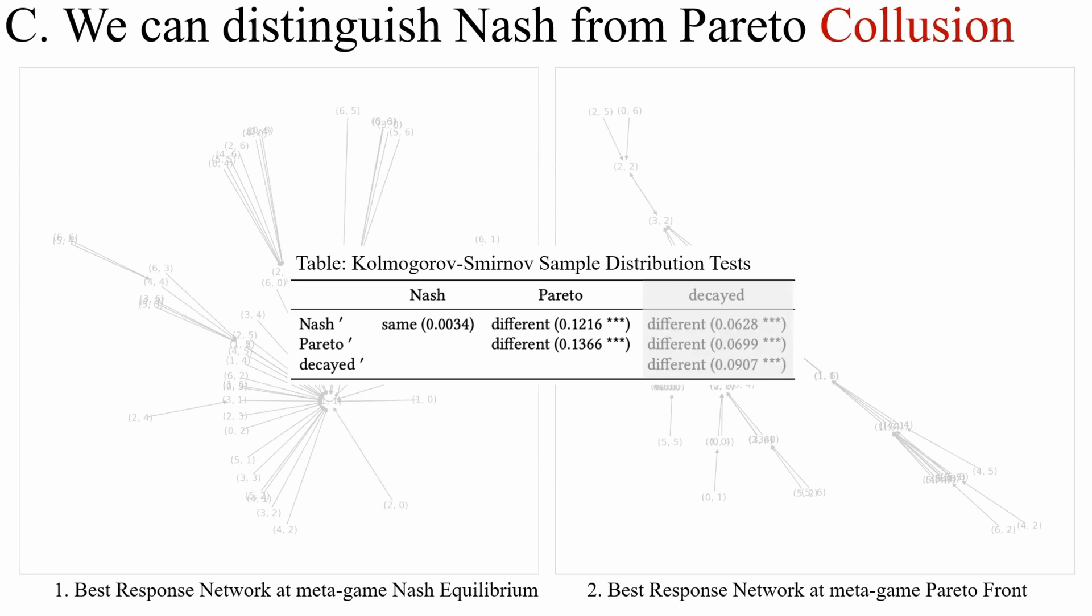And finally, we can distinguish statistically with Kolmogorov-Smirnov test, we can distinguish the pricing at the Nash equilibrium from the pricing at the Pareto front and from some other combinations. Meaning that we can tell whether or not two players have rationally picked their parameters against each other. So we can basically tell if they are legally colluding.